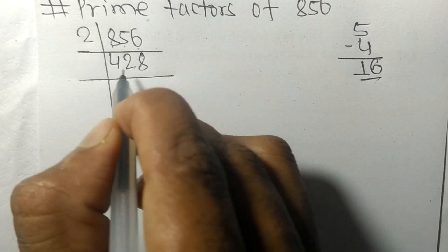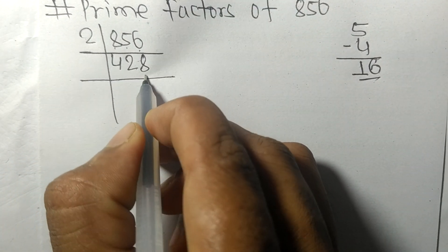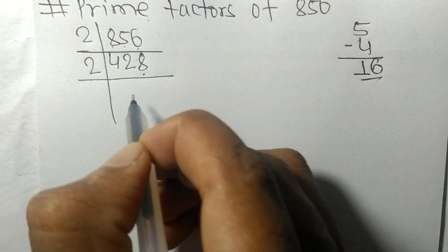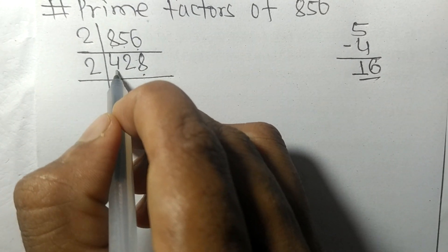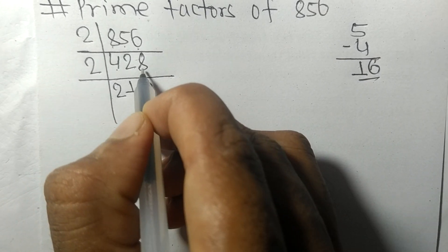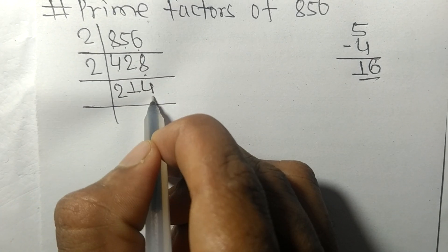Now we got 428 which has even number 8 at last, so it is divisible by 2. 2 times 2 means 4. 2 times 1 means 2. 2 times 4 means 8. Again we have even number 4 at last.